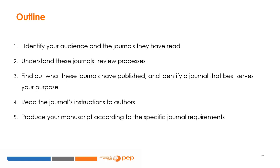Let me outline the different stages of the preparation process. First, identify your audience and determine what journals they read. Second, find out how the review process of these journals works. Third, find out what they have published by reading their stated purpose and reviewing recent issues, and identify a journal that best serves your purpose. Fourth, read the journal's instructions to authors. And fifth, produce your manuscript according to the specific journal requirements.